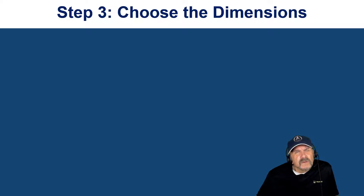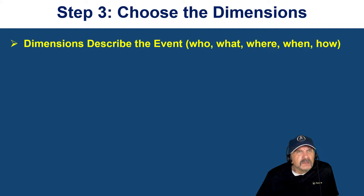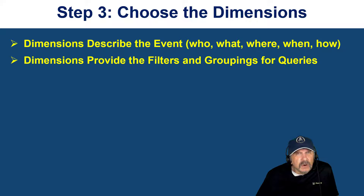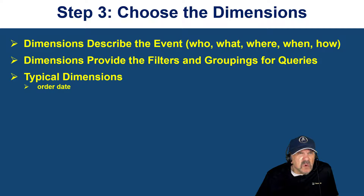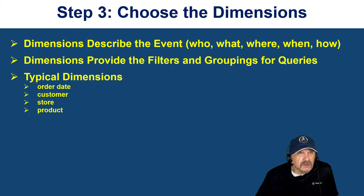Choose the dimensions. Facts are measures — they're quantifiable things. Dimensions give them context: who, what, where, when, how. Dimensions describe the event and provide the filters and groupings for queries — we call them slices and dices in tools like Tableau and Power BI. We might filter on a specific store, or say give me total sales by store and now we're aggregating over the store dimension. At a high level there's one dimension table like stores, but then you have all the different attributes of the store like store number, store name, maybe the store manager — those are dimension attributes. Typical dimensions include order date, customer, store, and product, and you can imagine all of these are really important to provide meaningful information about sales.